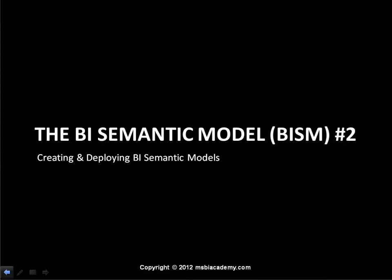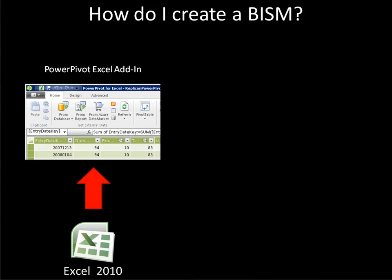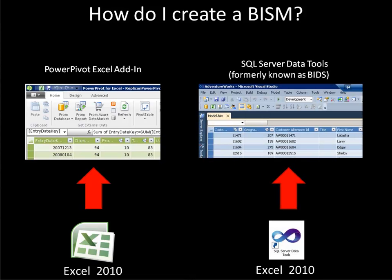Now that we understand what a BI Semantic Model is and why we want to create one, our next question is going to be how do we create it? There are a couple of ways to create a Semantic Model. The first method is to use the PowerPivot Excel add-in, which is downloaded from the public Microsoft website. It is a free add-in for Excel 2012, and after the add-in is installed, the user sees PowerPivot as a ribbon within Excel.